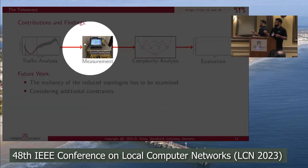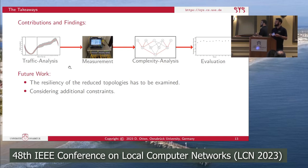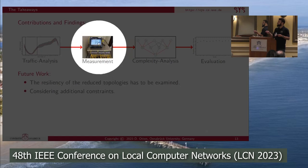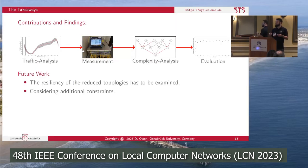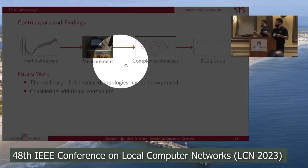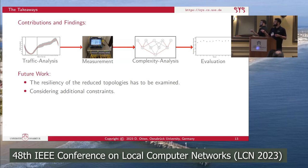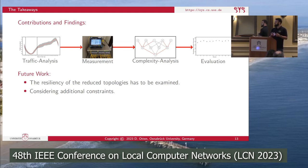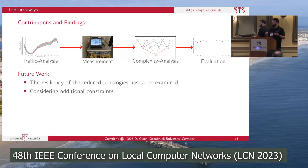In summary, we provided a traffic analysis showing saving potential within backbone networks. Based on a measurement study, we developed a new target function for green traffic engineering. We provided a complexity analysis proving the problem is NP-hard. And our detailed evaluation shows that our approach produces nearly optimal solutions and significantly reduces computation time. For future work, we need to examine the resiliency of the reduced topologies, since turning links off removes extra capacity used for link-failure recovery.